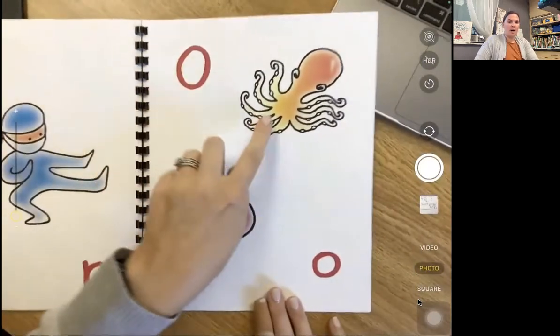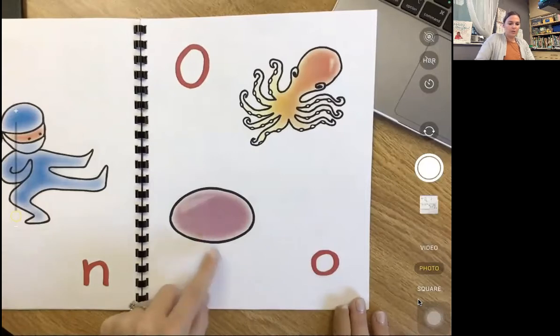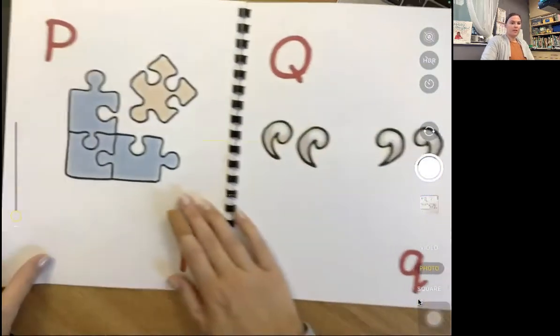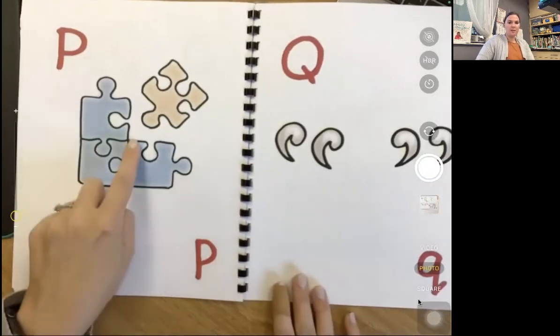O, aw, octopus. O, O, oval. P, puh, puzzle. P, puh, puzzle.